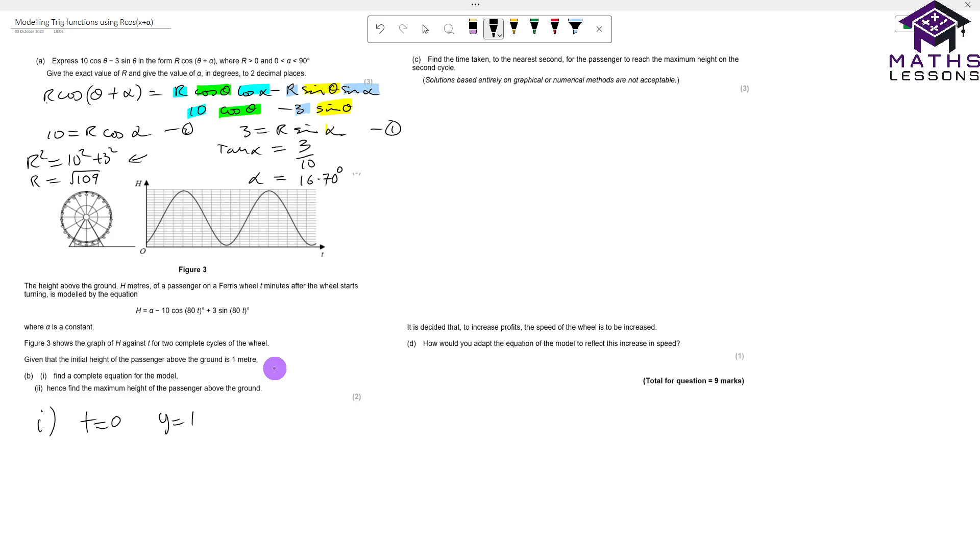If we put t equals 0 into this expression, 80 times 0 is 0, sine of 0 is 0, so this is all 0. 80 times 0 is 0, cos of 0 is 1, so this is 10. So we know that 1 will equal α minus 10, because this bit is equal to 10 and this bit is equal to 0. So therefore α must equal 11.